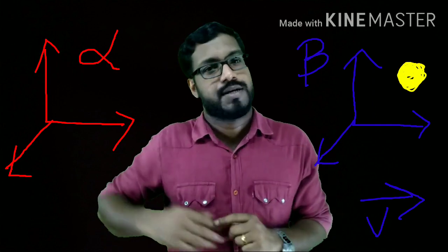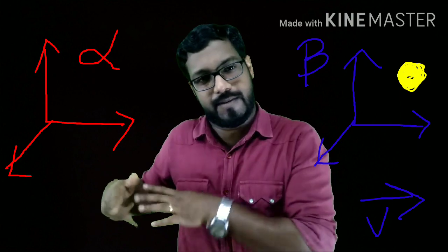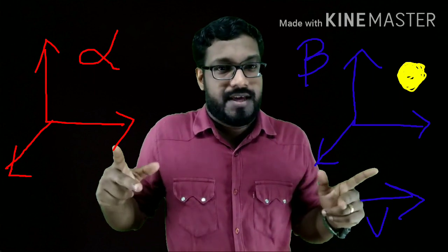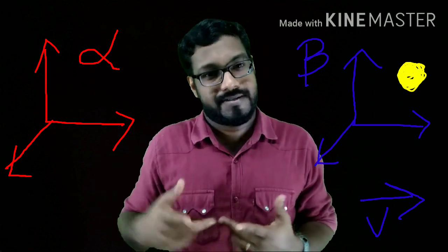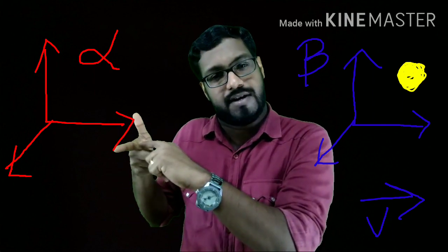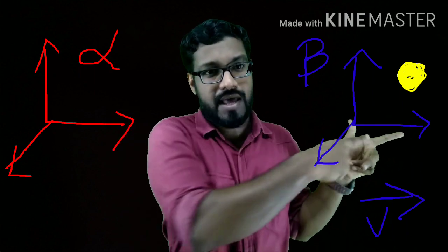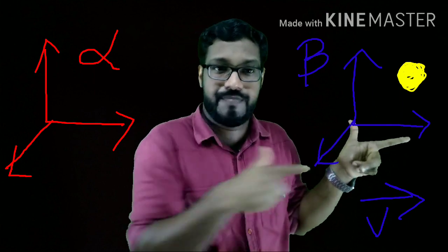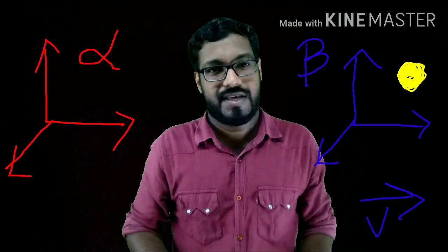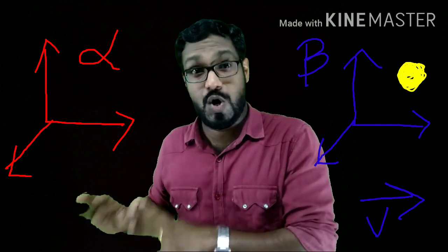For simplicity, let us take some assumptions. Both alpha and beta have a Cartesian coordinate system, which means both of them have the XYZ coordinate system, and the axes are aligned. This means the X axis of alpha is parallel to the X axis of beta, the Y axis of alpha is parallel to the Y axis of beta, and the Z axis of alpha is parallel to the Z axis of beta. At time t = 0, both coordinate systems have the same origin.